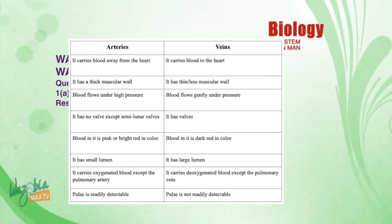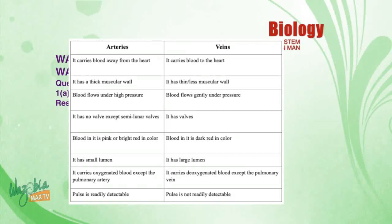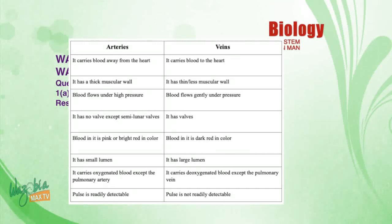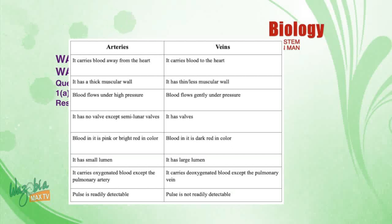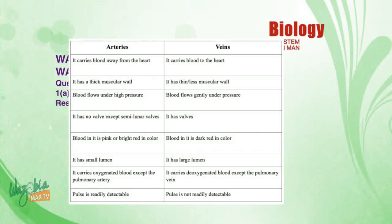Continuing the table — arteries have no valves except semilunar valves; veins have valves. Blood in arteries is pink or bright red; blood in veins is dark red. Arteries have small lumens; veins have large lumens. Arteries carry oxygenated blood except the pulmonary artery; veins carry deoxygenated blood except the pulmonary vein. Pulse is readily detectable in arteries; pulse is not readily detectable in veins.